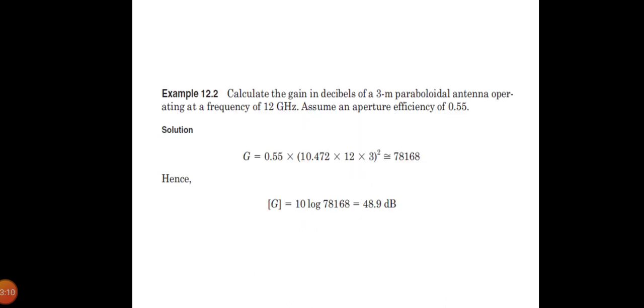Now let us look into a problem relating to this gain. Calculate the gain in decibels of a 3 meter paraboloid antenna operating at a frequency of 12 gigahertz and assume an aperture efficiency of 0.55. The values are: frequency 12 gigahertz, diameter 3 meters, and η equals 0.55. Directly substituting those values, G equals 0.55 times 10.472 times (12 × 3)², which gives you 78,168.